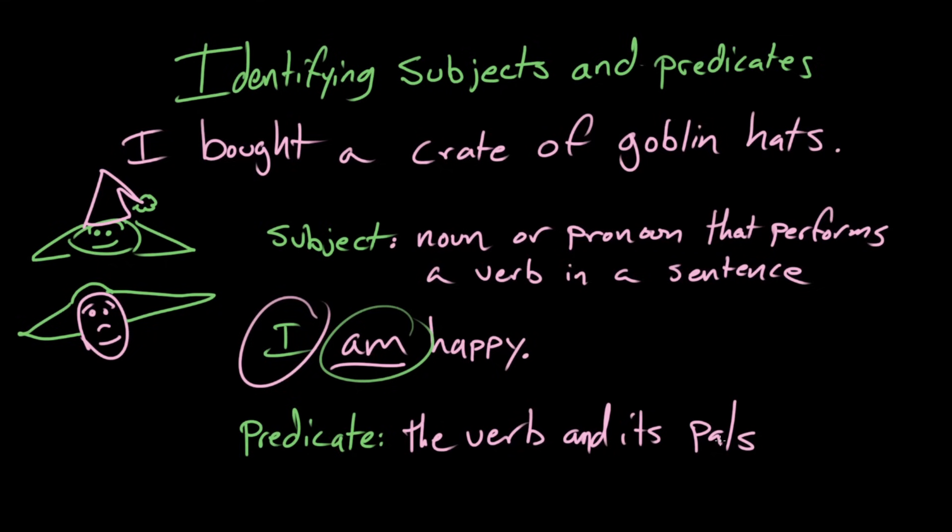So let's apply that approach to goblin hat sentence. So, okay, so I'm looking for a noun or pronoun that performs a verb in the sentence. Well, I found the verb, and the verb is bought. Who's doing the buying? I am. Right. So our subject is I.